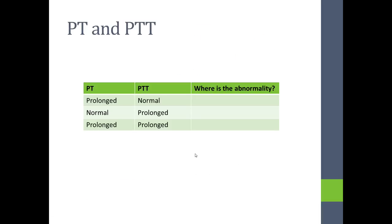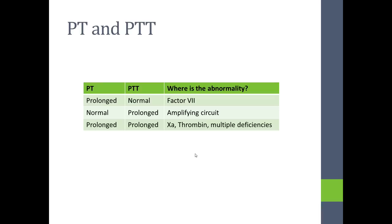The PT and PTT are things you will order frequently. Aside from normal, there are basically three outcomes: the PT can be prolonged and the PTT normal; the PT can be normal and the PTT prolonged; or they can both be prolonged. If the PT is prolonged and the PTT is normal, you know it's primarily a factor VII deficiency, because factor X or factor V deficiency would make the PTT abnormal as well. PT normal with PTT prolonged points to the amplifying circuit — that's factor IX, factor VIII, or factor XI.